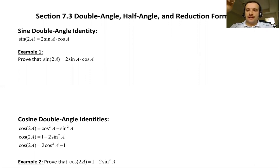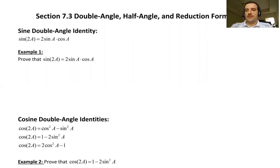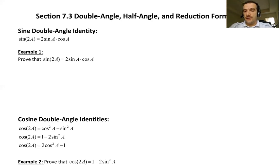We are going to look at what is sine of 2A, what is cosine of 2A, and what is tangent of 2A. And similarly, sine of A over 2, cosine of A over 2, and tangent of A over 2. Those 'over two' parts are half angle formulas and the '2A' parts are double angle formulas.